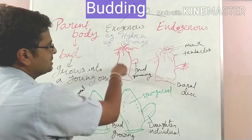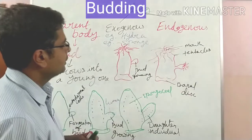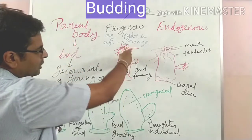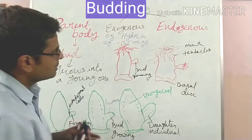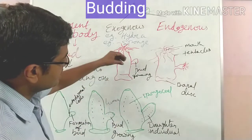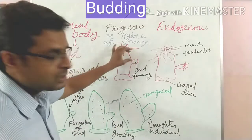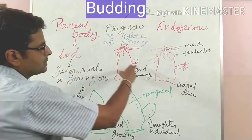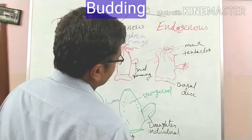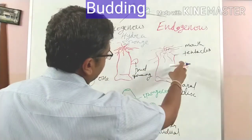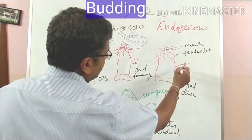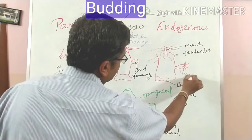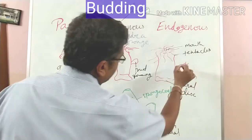Another example is Hydra. Here, the ectodermal cells of the parent body produce a small bud on its surface. In the next stage, a lumen forms inside the bud.